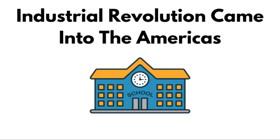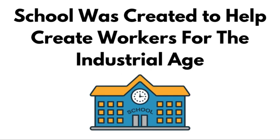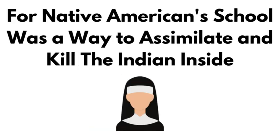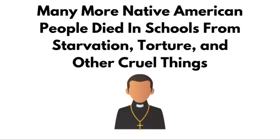When the Industrial Revolution came into the Americas, school was created to help create workers for an industrial age. For Native American people, the school was a way to assimilate and kill the Indian inside. Many more Native American people died in schools from starvation, torture, and other cruel things.